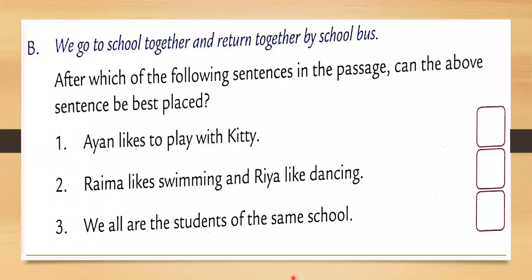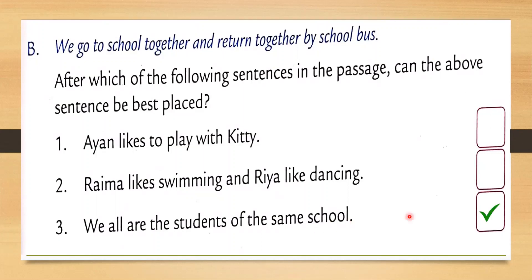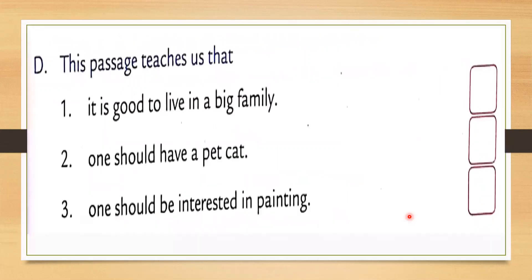The last question: 'We go to school together and return together by school bus' — after which sentence in the passage can this be placed? The answer is: We all are students of the same school. What does this passage teach you? The answer is: it is good to live in a big family, because throughout this passage she is talking about her family.